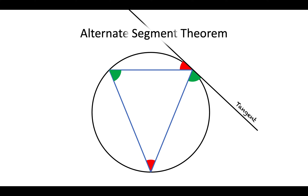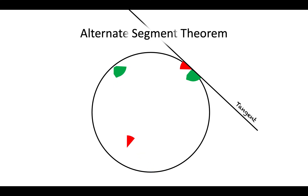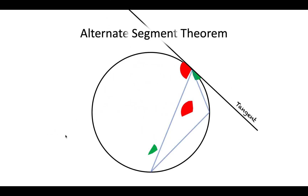With these circle theorems, you just have to get used to seeing them and recognise the patterns. So you should always see the pattern of when you've got a triangle touching a tangent and see which two angles line up. In another example: the green and the green are the same, the red and the red are the same.